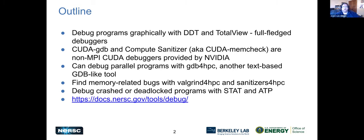If you want to look at your program in a graphical GUI debugger — maybe to find a deadlock or see where nodes are communicating — DDT and TotalView are full-fledged GUI debuggers and are the best options for that. There's also Compute Sanitizer and CUDA GDB for GPU-type work; they're non-MPI CUDA debuggers provided by NVIDIA. GDB for HPC is text-based, provided by Cray, and works very well.